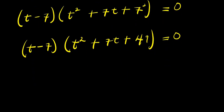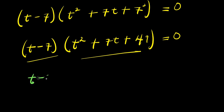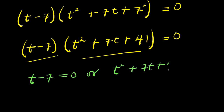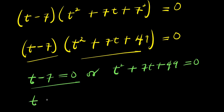From here we equate each factor to 0 and solve individually. We have t minus 7 equals 0, or t squared plus 7t plus 49 equals 0. For the first one, this is a linear equation, so t equals positive 7. This is our t₁.